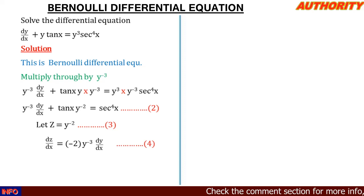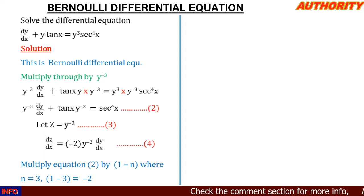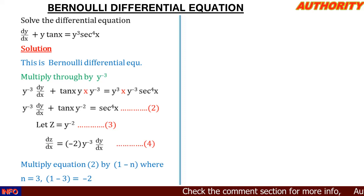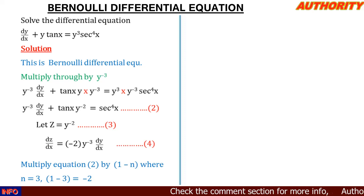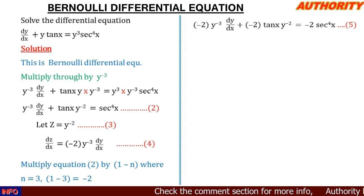Going back to equation 2, we multiply by 1 minus n. What is our n? That is the power of y on the right-hand side, which is 3. So 1 minus 3 equals minus 2. Multiplying equation 2 by minus 2 gives us: minus 2 · y^(-3) · dy/dx plus minus 2 · tan(x) · y^(-2) equals minus 2 · sec^4(x).